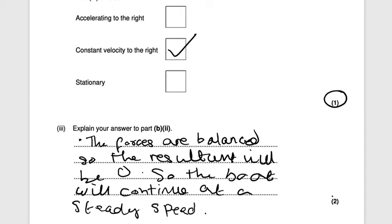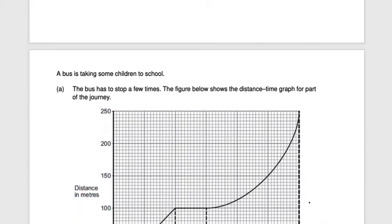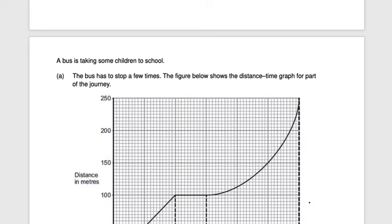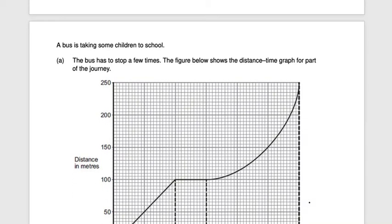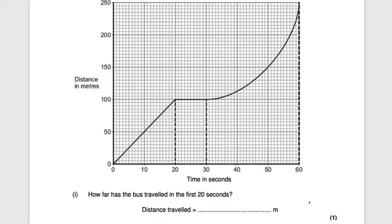Next question: a bus is taking children to school and the figure shows a distance-time graph for part of the journey. How far has the bus travelled in the first 20 seconds? Looking at the graph at 20 seconds, the bus has travelled 100 metres. Write 100 metres for one mark.